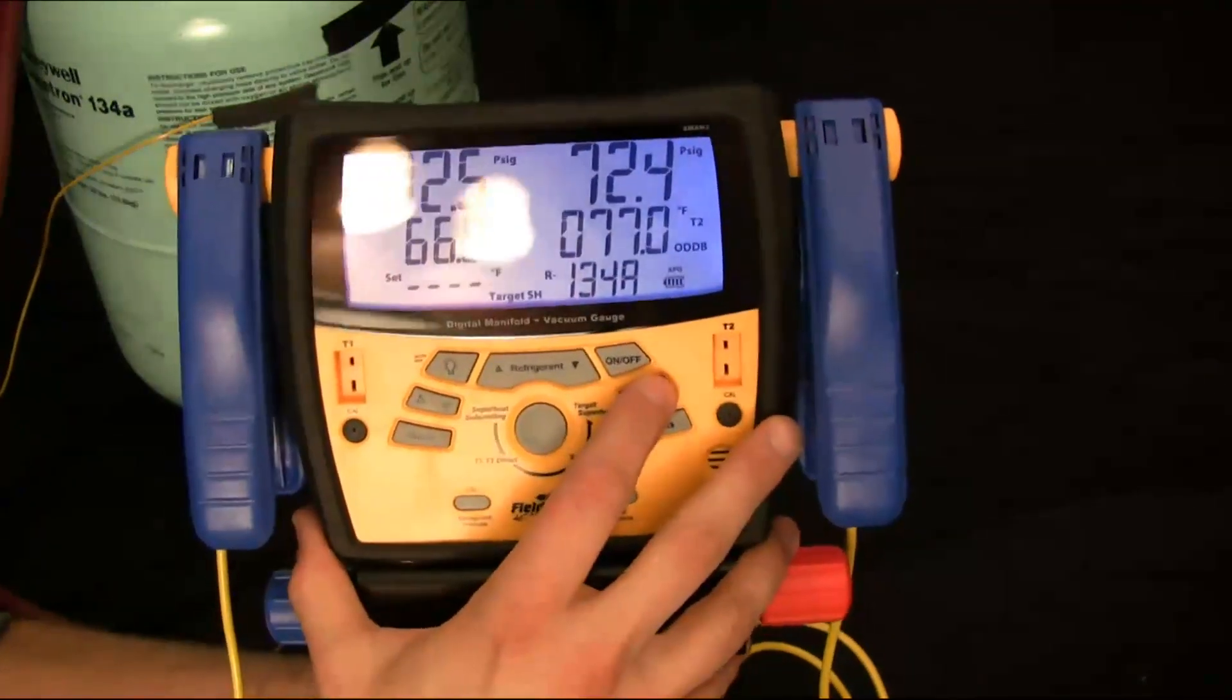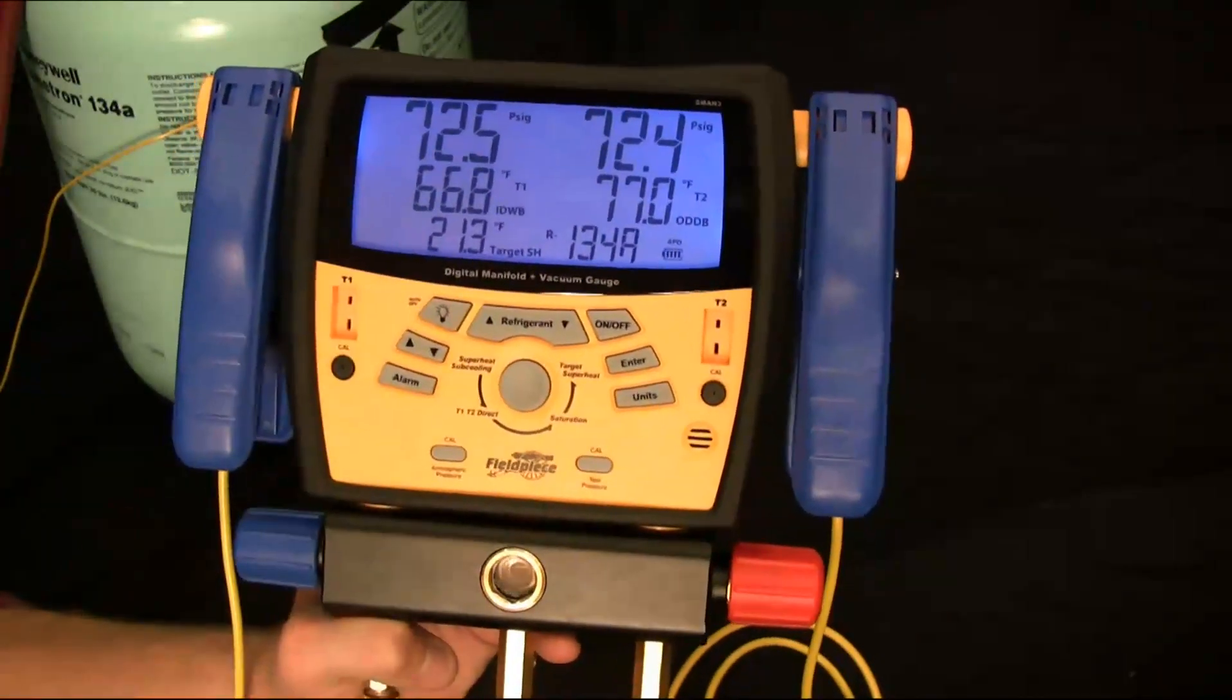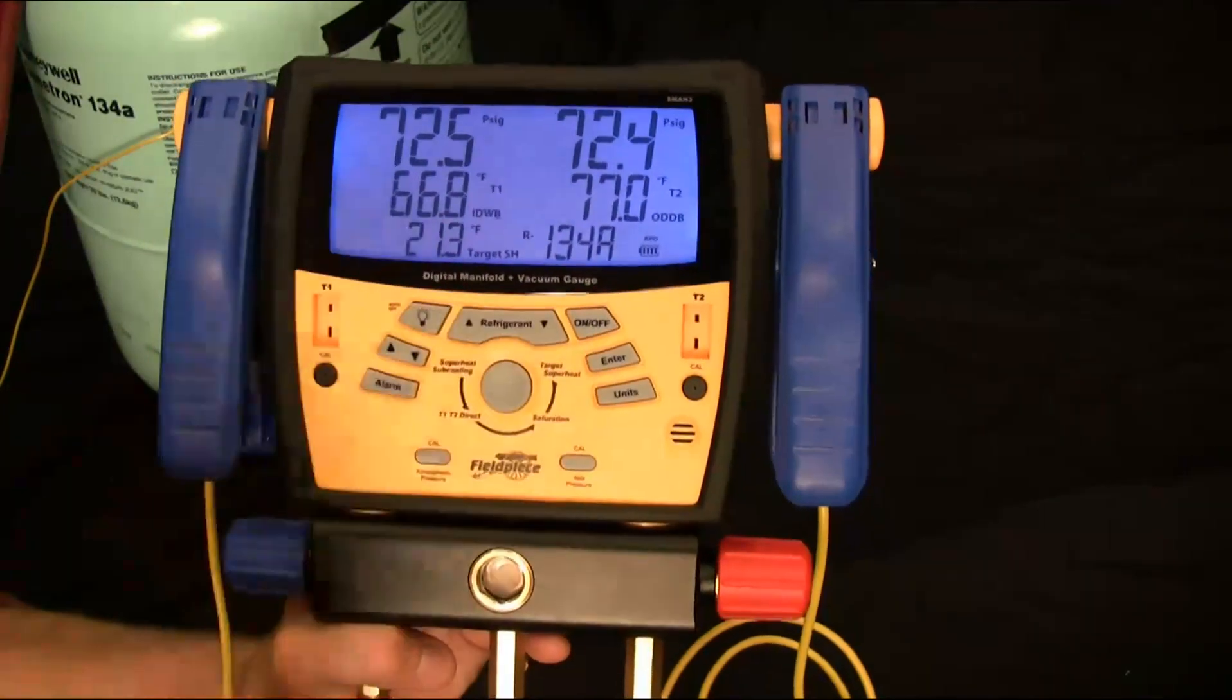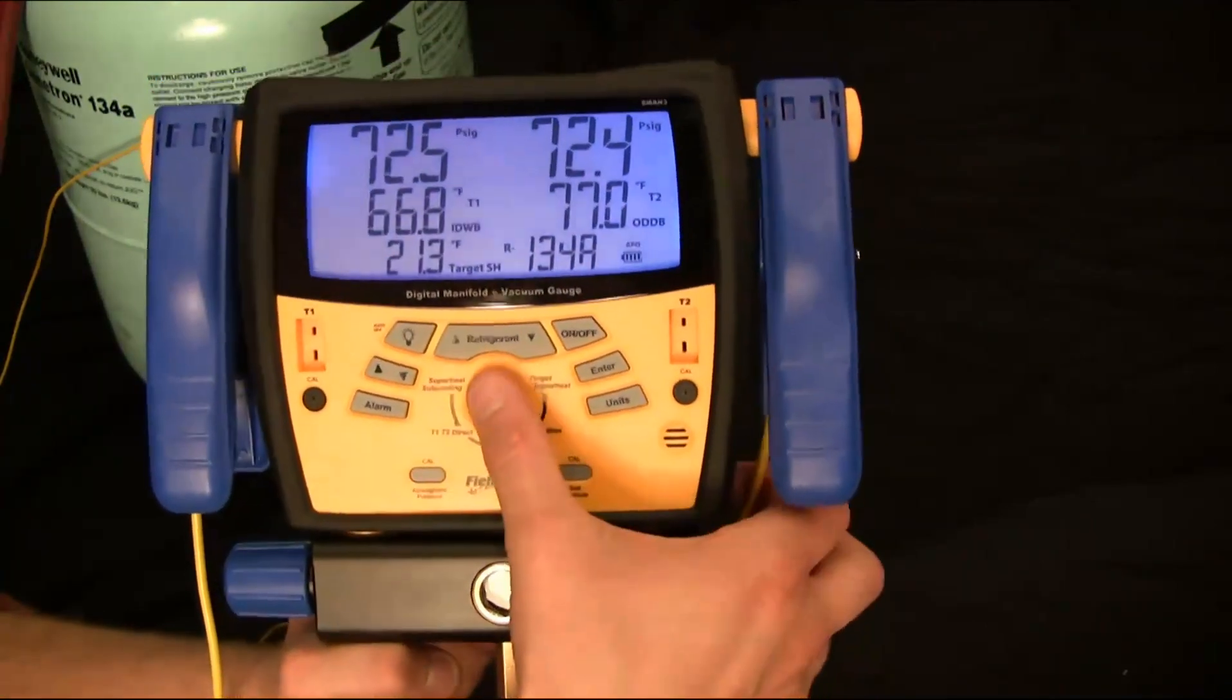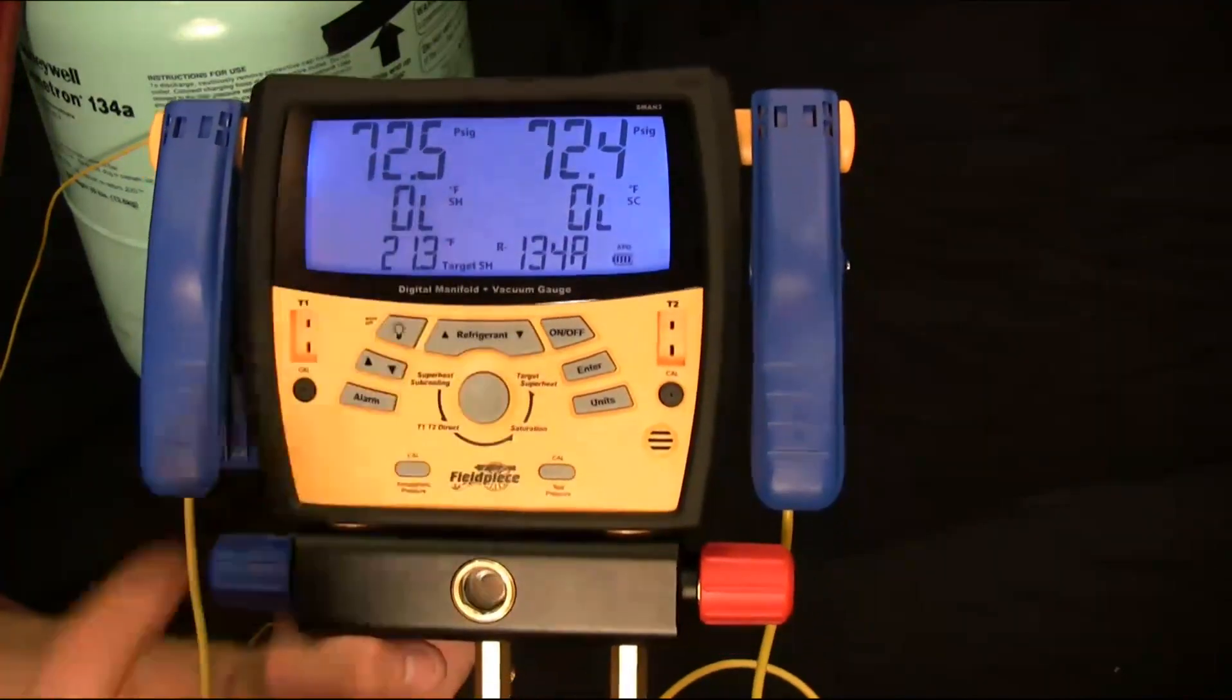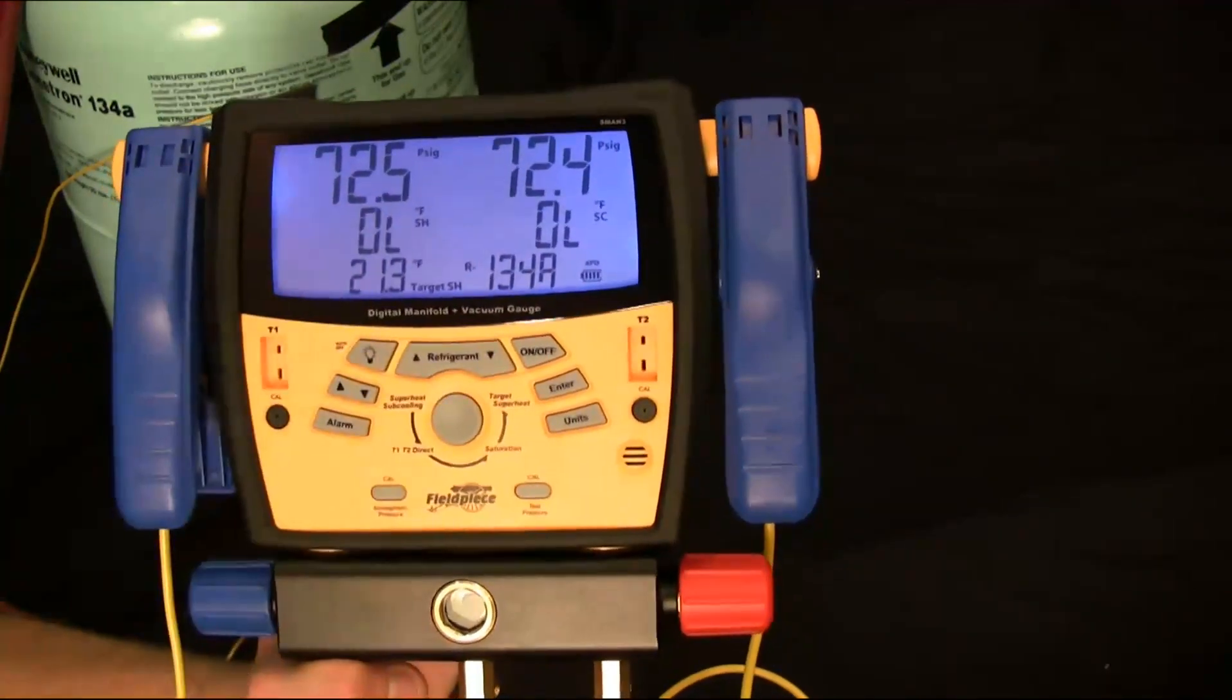And I'm going to enter that in, just go through all the digits and press enter. Then it'll calculate my target superheat right here. So if I have these indoor wet bulb conditions and outdoor dry bulb conditions, my target superheat should be 21.3 degrees. So then what you can do is go to the superheat and subcooling mode and directly measure your superheat and see if you're within range. And it's going to label both your target superheat and your actual superheat. And that way you can dial in fixed restrictor systems.